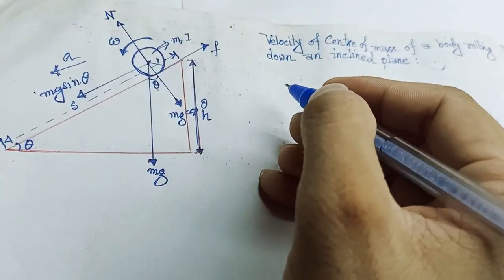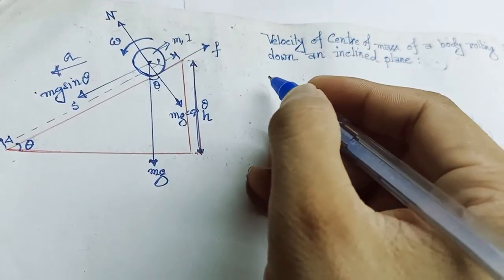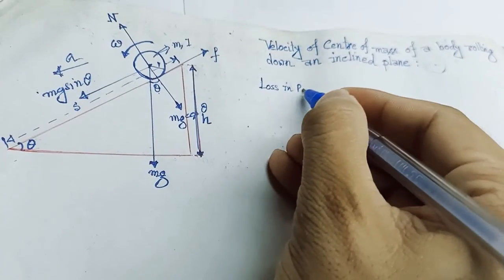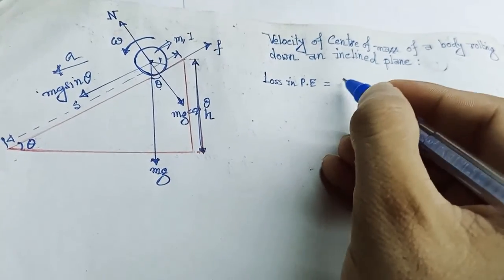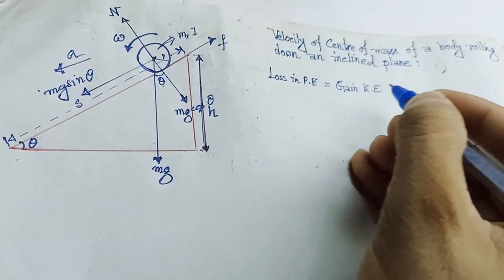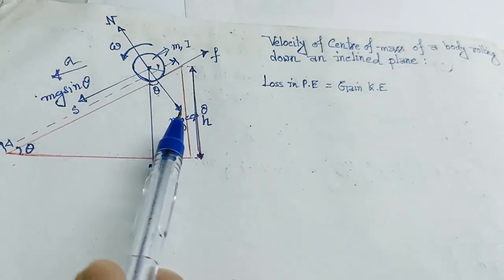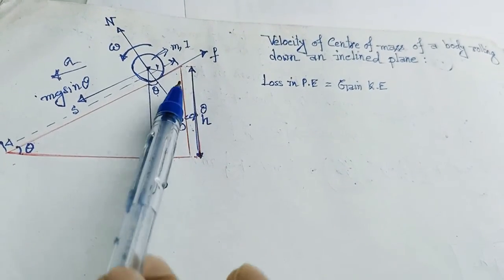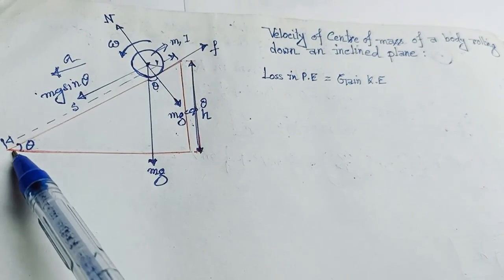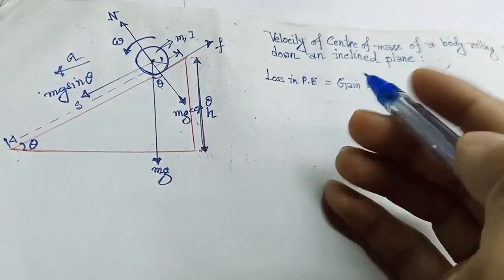For finding the velocity of center of mass, we'll consider the energy equation. The energy equation is: loss in potential energy equals gain in kinetic energy. When the cylinder is at the topmost position its potential energy is mgh, and when it rolls down the inclined plane and reaches the ground its potential energy is zero. So the difference in potential energy becomes mgh minus zero.